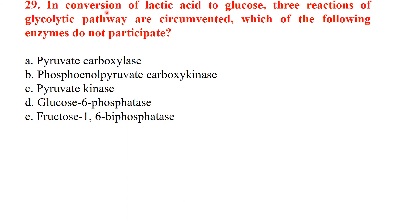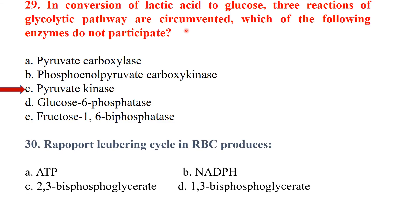Question 29: in the conversion of lactic acid to glucose, 3 reactions of the glycolytic pathway are circumvented. Which of the following enzymes does not participate in this reaction? The Rapoport-Luebering cycle in RBCs produces 2,3-bisphosphoglycerate.